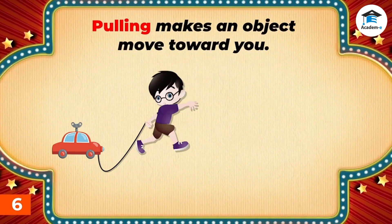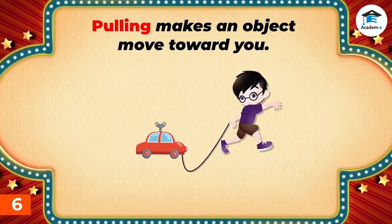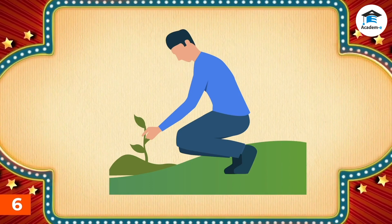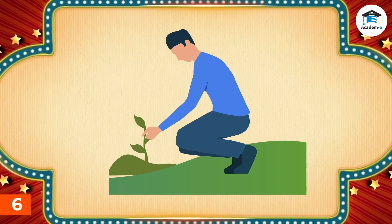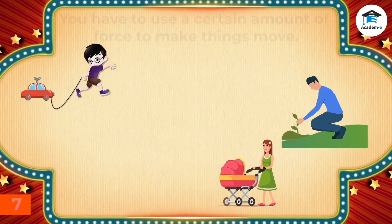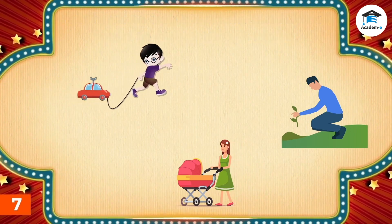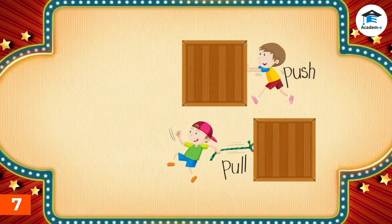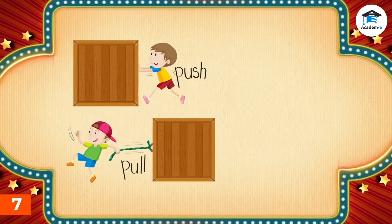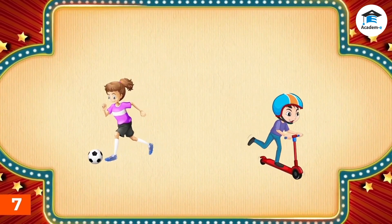Pulling makes an object move toward you. An example is when you pull a string with a toy car — you make it move toward you. Another example is when you pull a weed from the soil, you have to tug it and move it toward you. You have to use a certain amount of force to make things move. If you want to move or lift a big and heavy object, you need to apply more force. If you want to move or lift a light object, you do not need to use so much force.